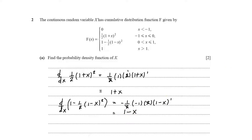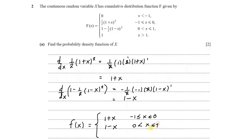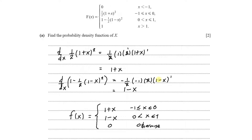We now have what we need to make up the PDF. The probability density function will be: 1 plus x for values of x between minus 1 and 0; 1 minus x for values of x between 0 and 1; and 0 otherwise. This is how we find the PDF — it's through differentiating the CDF that we get the PDF.